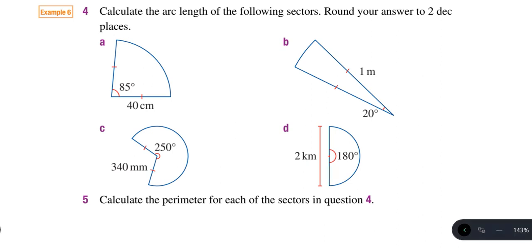Okay, now we're going to be looking at questions 4 and 5. Calculate the arc length of the following sectors and round your answer to two decimal places.